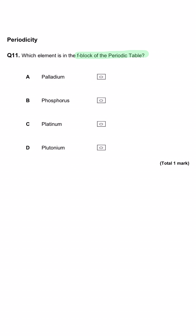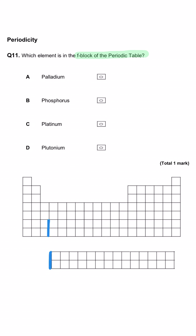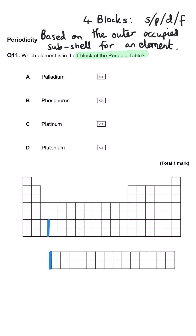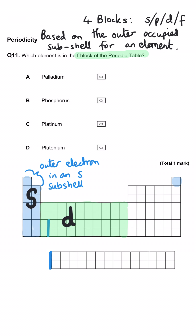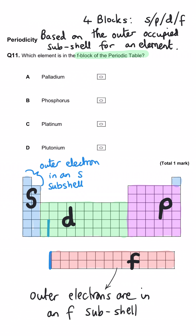Which element is in the F block of the periodic table? The periodic table is split into four blocks based on where the outer energy level electron is found. Group 1, group 2 and helium have their outer electron in an S subshell — S block. The middle is D block, the right-hand side is P block, and the F block elements — the lanthanides and actinides — have their outer electrons in an F subshell. Platinum and palladium are in the D block, phosphorus is in group 5 so P block, and therefore plutonium must be correct as it's in the F block position.